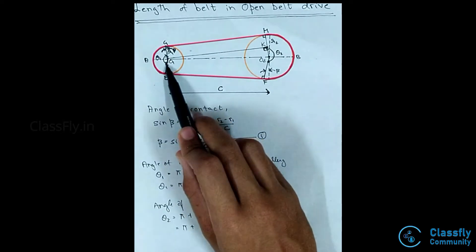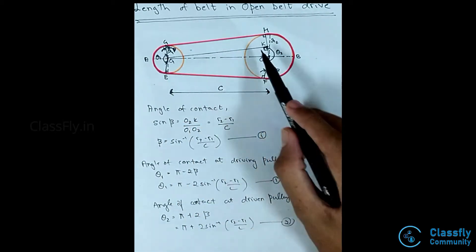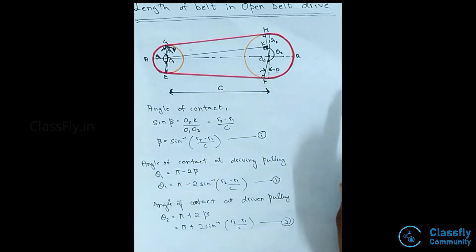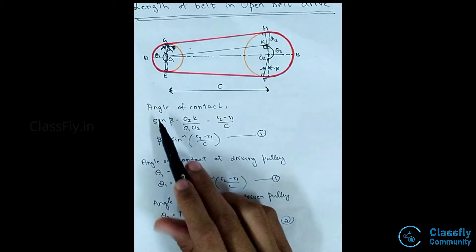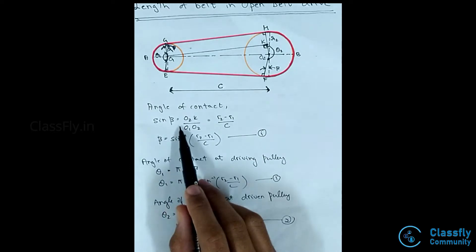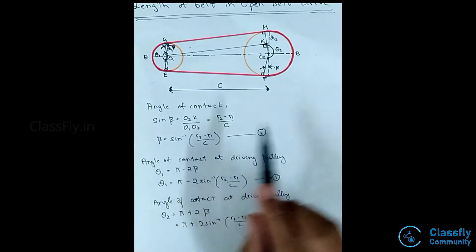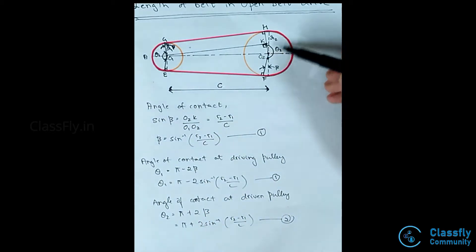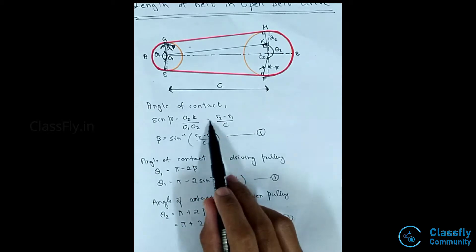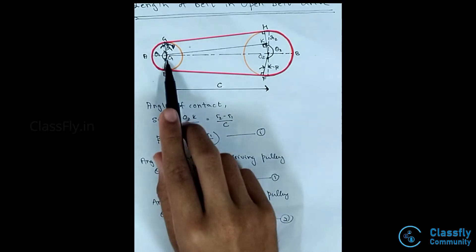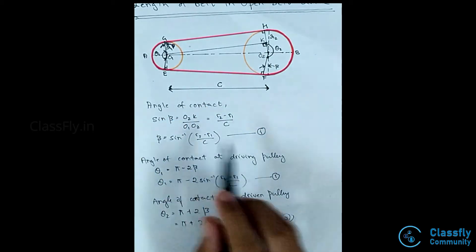Draw a line from point O1 perpendicular to the line O2H, meeting it at point K. This forms a right angle triangle. Considering this triangle, we have sine beta = O2K divided by O1O2. Now O2K is nothing but r2 minus r1, so sine beta = (r2 - r1) divided by O1O2, which is the distance between the centers, C.